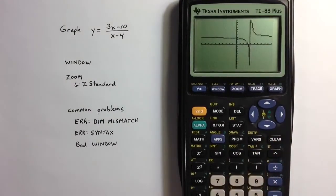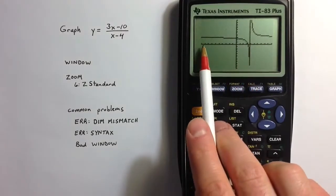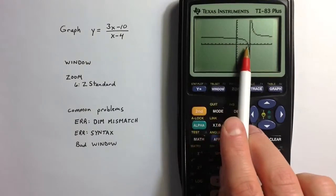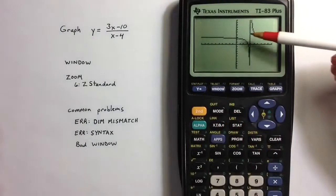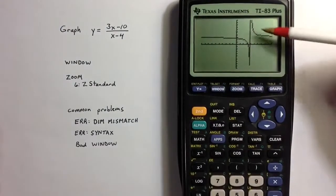Essentially, to create a graph, the calculator plugs a bunch of x values into the expression and figures out what the y values should be. And then it connects the lines between them.